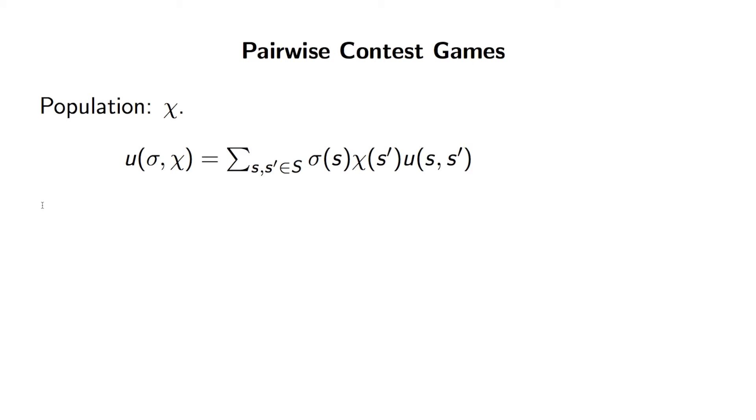So the utility of any given strategy sigma now has to take into account the probability of sigma playing a particular strategy S, which is given by this, and the probability of meeting S star, which is given by that, and then we multiply it by the utility.